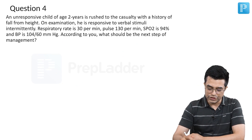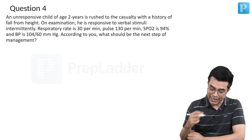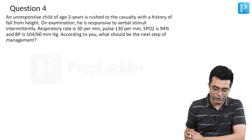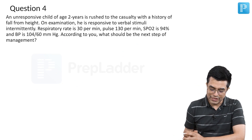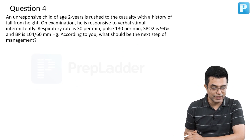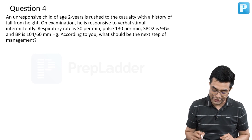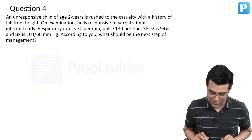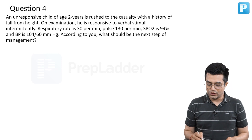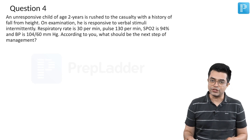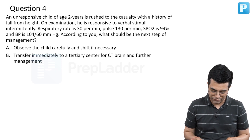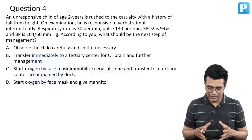An unresponsive child of age 2 years is rushed to the casualty with a history of fall from height — a trauma patient. On examination, he is responsive to verbal stimuli intermittently, respiratory rate is 30 per minute, pulse 130, saturation 94%, and BP is 104 by 60. What should be the next step of management? Let us look at the four options one by one.